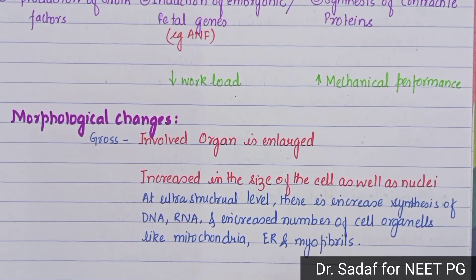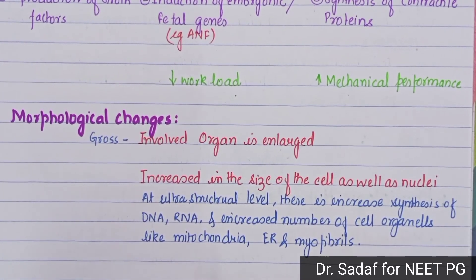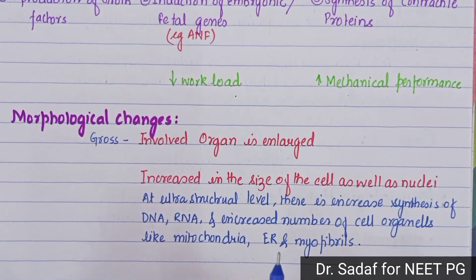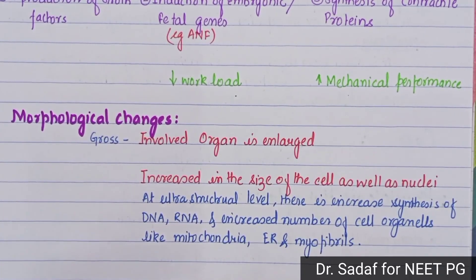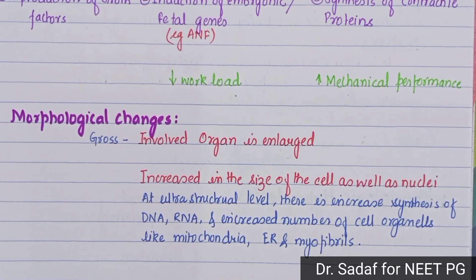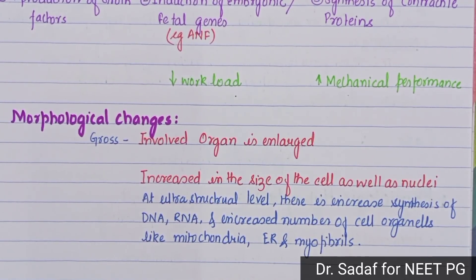Today I have discussed hypertrophy. We call it hypertrophy when an organ increases in size due to increase in cell size. The number of cells remains the same, but the size of each cell increases, causing the organ to enlarge — this is hypertrophy. I hope you liked the video. Please hit the like button and share with your friends. If you have any questions, feel free to comment below. Thank you so much for watching and supporting me.